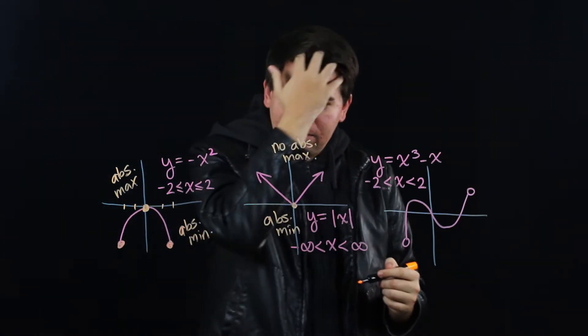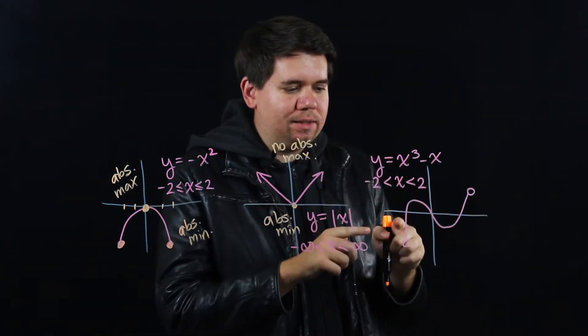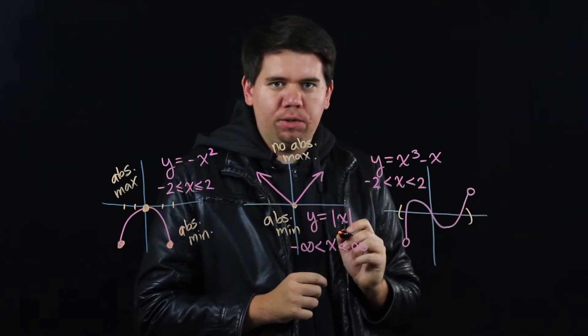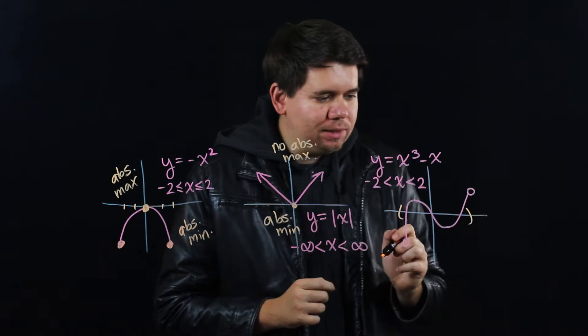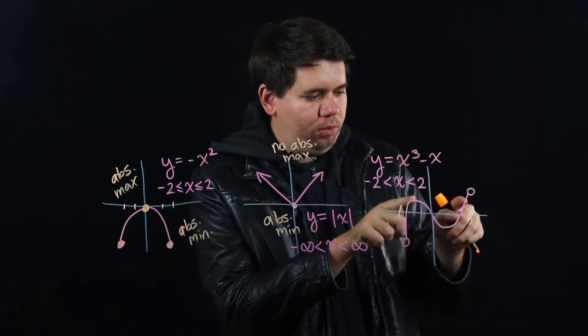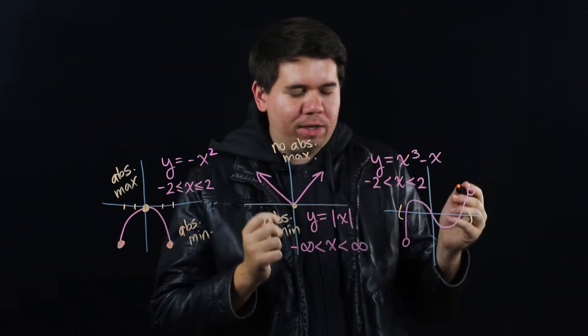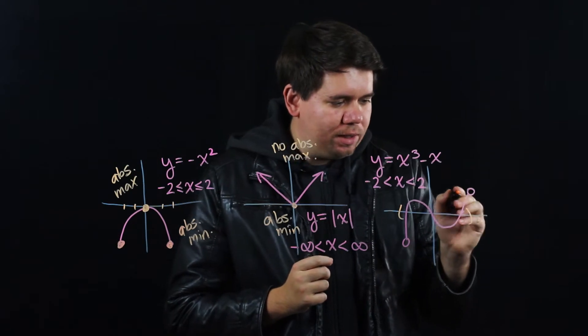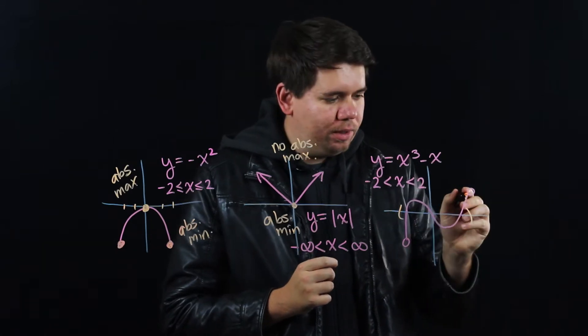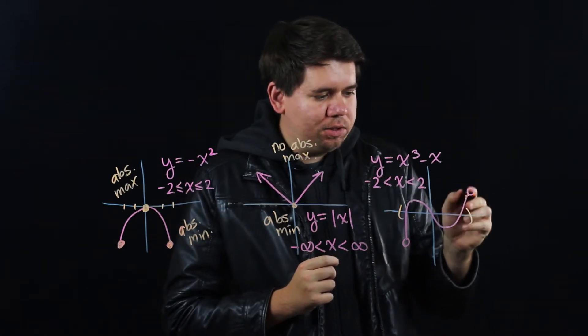And then we have our last example. y is equal to x cubed minus x, where x is on the open interval from negative 2 to 2. Now you might want to say clearly the largest value is here to the right at 2. But this doesn't include 2, it's all the values right before 2. You can always get a little bit bigger. So there's not an absolute maximum there.